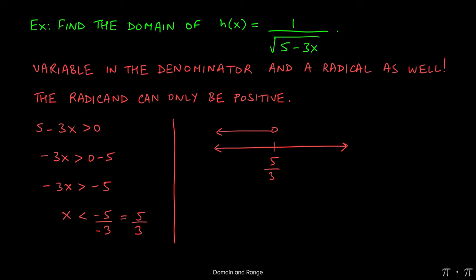And if we pick a number to the right of 5 thirds, let's say 3. Well, 3 times 3 is 9. 5 minus 9 is negative 4. And if we find the square root of negative 4 we run into a problem. It is illegal to find the square root of negative numbers. So that region gets a cross over it. None of those numbers will belong to the domain.